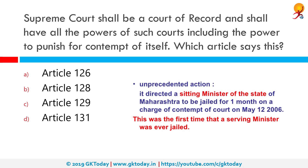The Supreme Court shall be a court of record and shall have all powers of such courts, including the power to punish for contempt of itself. Which article says this? It is Article 129, which basically empowers the Supreme Court to take actions against contempt of court.